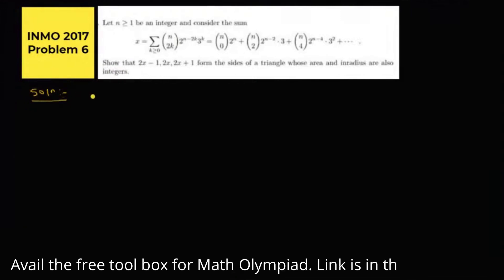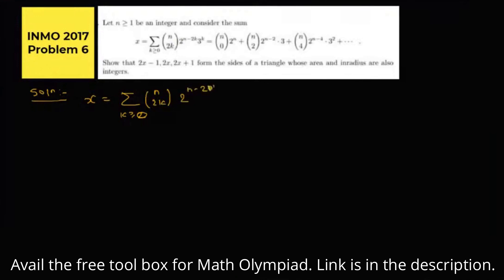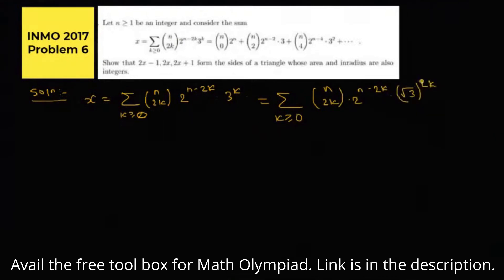Solution. We have x equal to the summation over k ≥ 0 of C(n, 2k) times 2 to the power (n minus 2k) times 3 to the power k. This can be written as C(n, 2k) times 2 to the power (n minus 2k) times (root 3) to the power 2k. You can see this is just the even terms — if the odd terms were included, this would be the expansion of (2 plus root 3) to the power n.